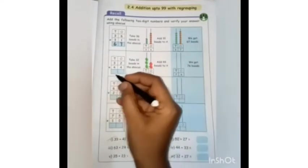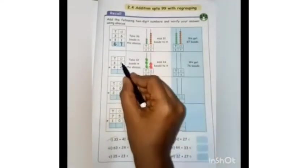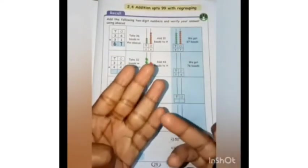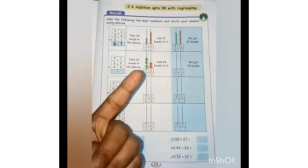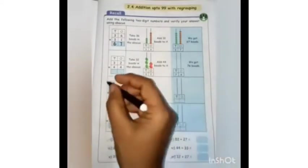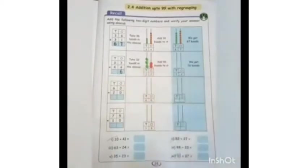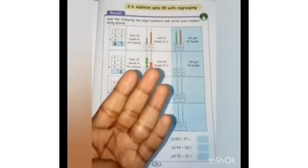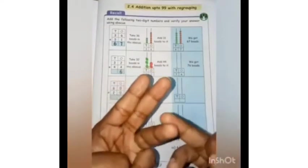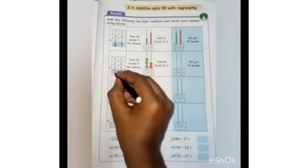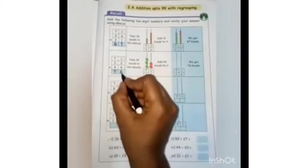See next sum. 2 in the mind, 4 in the finger. After 2: 3, 4, 5, 6. What is the answer? 6. Next, 3 in the mind, 4 in the finger. After 3: 4, 5, 6, 7. So 76.